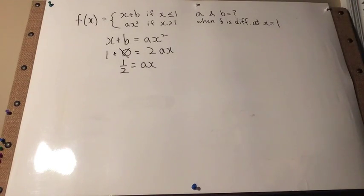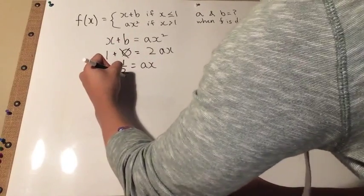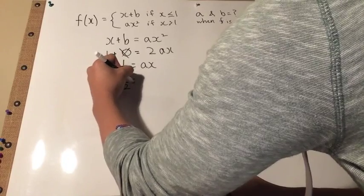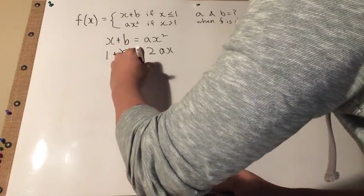Remember that the function is differentiable at x equals 1, so you can plug in 1 for x. In this case, 1 half times x would just simply equal a.